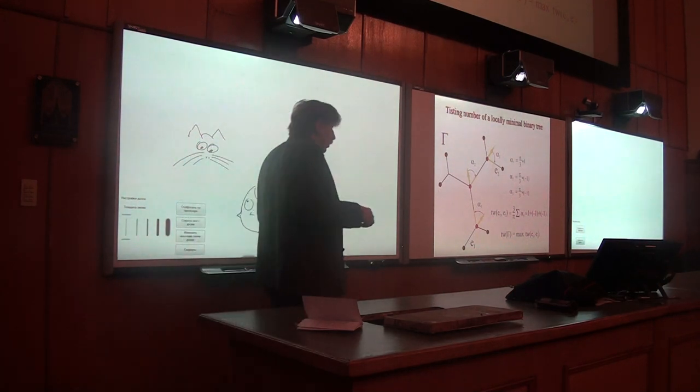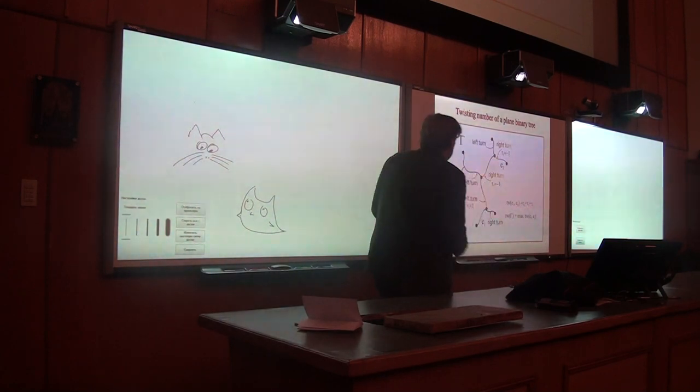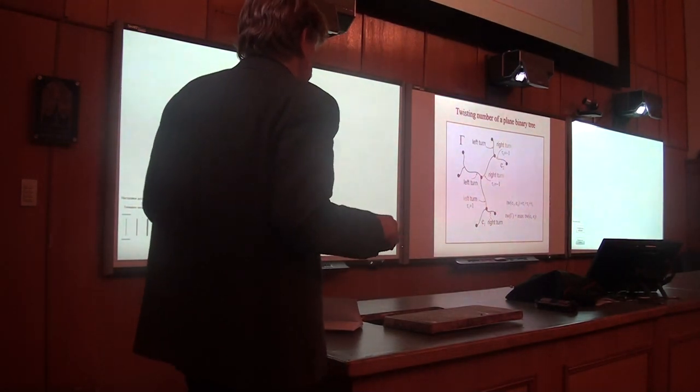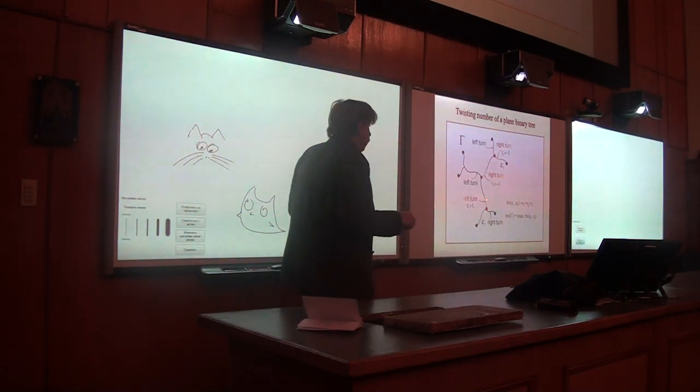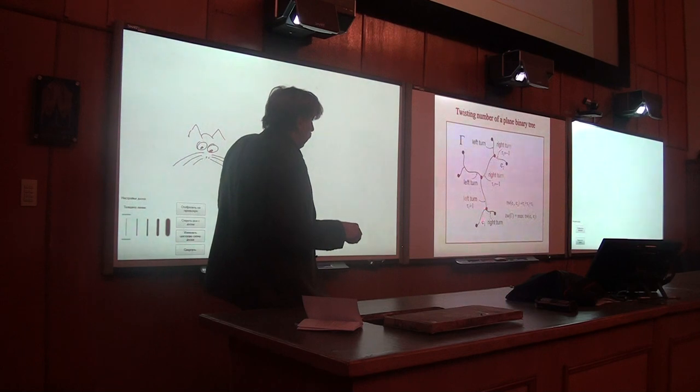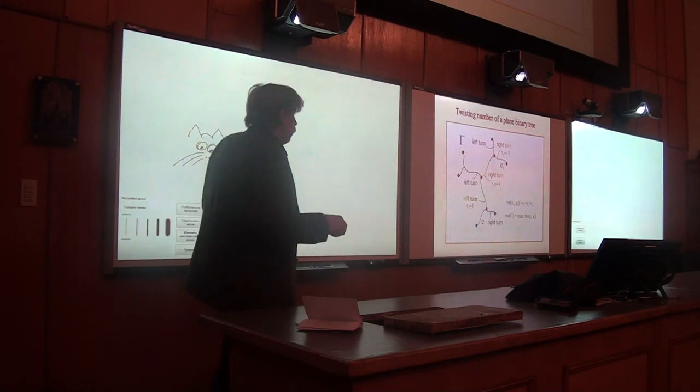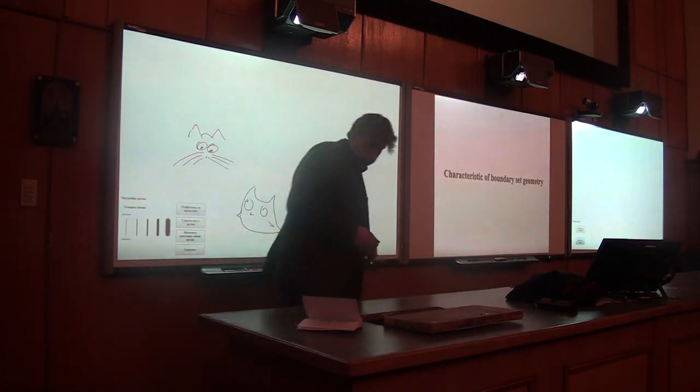The same thing can be done even not for a linear tree but for a tree which is made from some curves. The segments are not necessarily straight segments but just some regular curves. Then anyway, in each vertex of a binary tree consisting of such curves, we can understand when we are walking from one edge to another edge going through interior vertices, we always can understand if we have turned left or right at the vertex. So here is a definition of the twisting number of a plane binary tree without supposing straight lines.